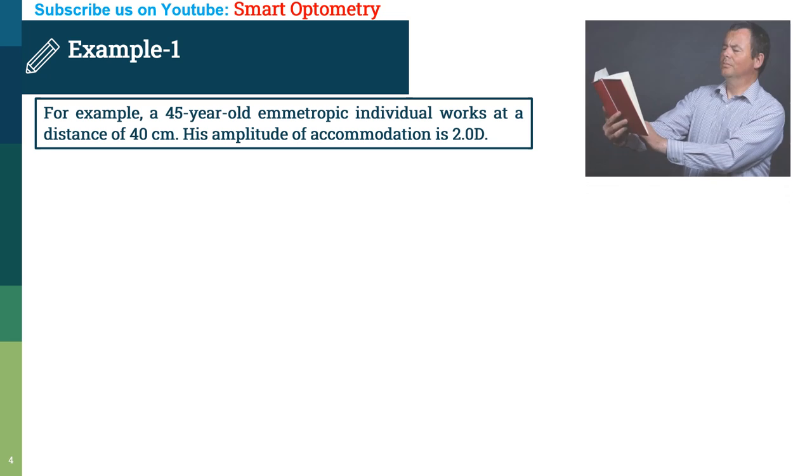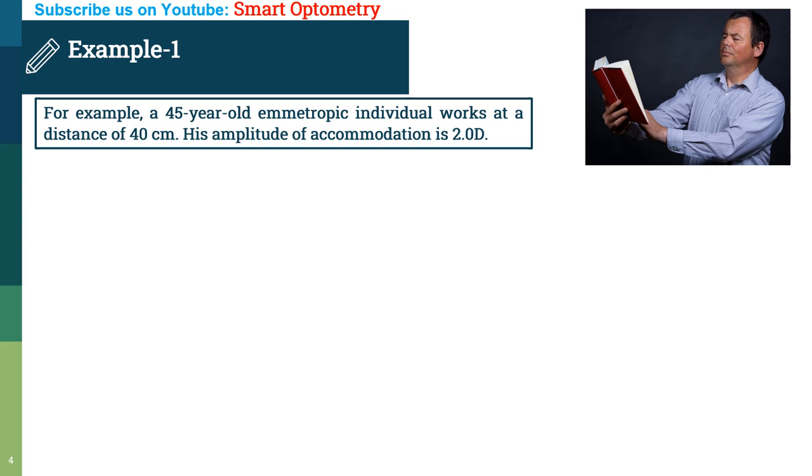A 45-year-old emmetropic individual works at a distance of 40 cm. His amplitude of accommodation is 2 diopter.